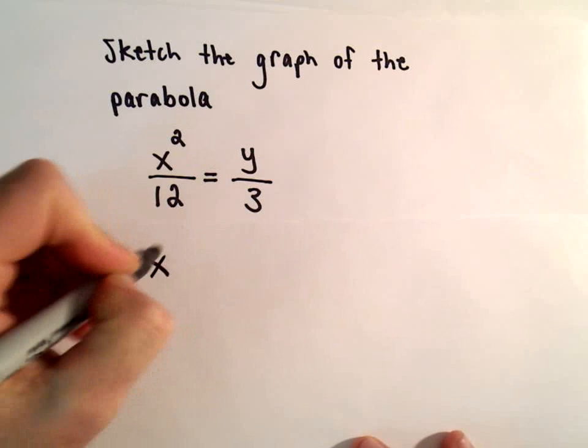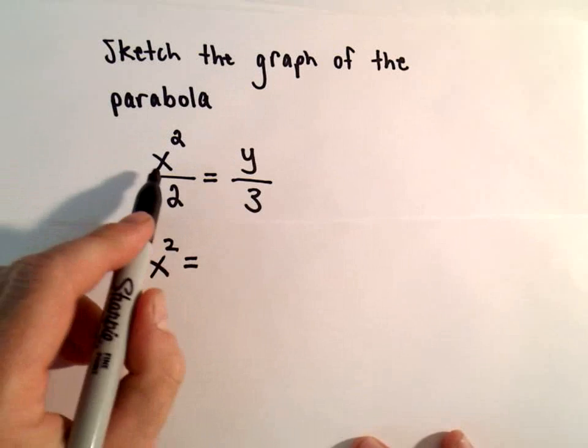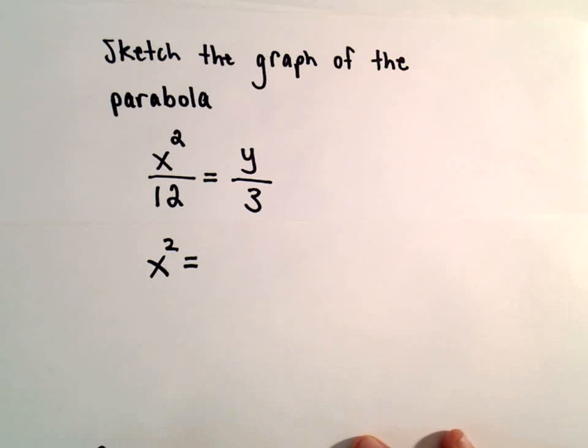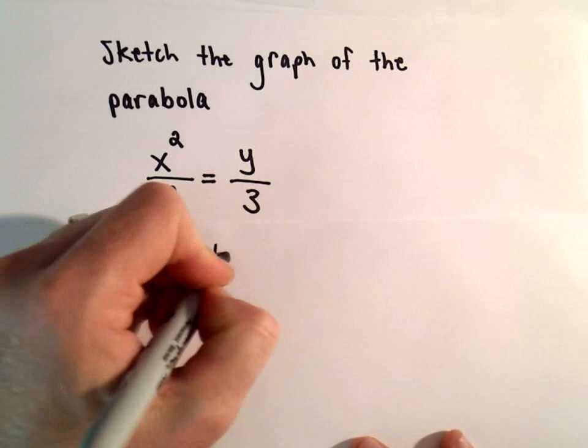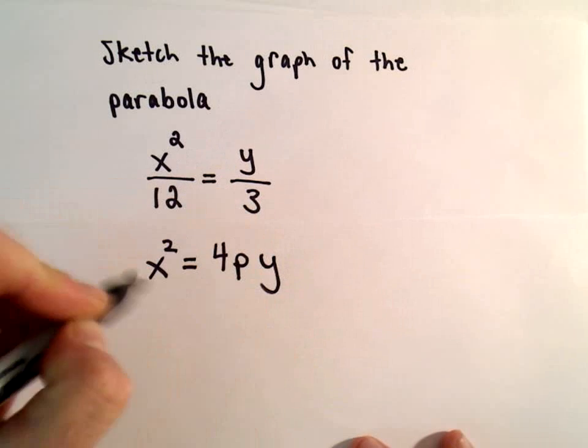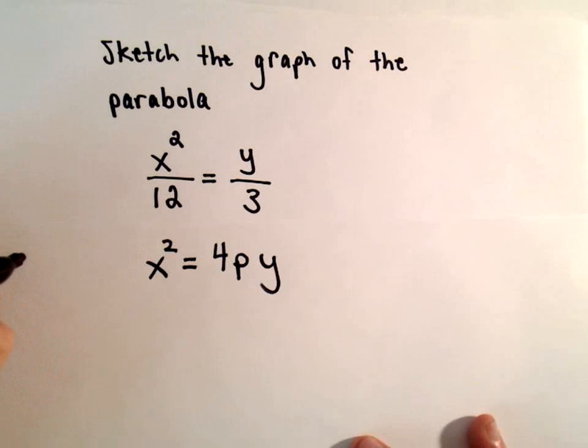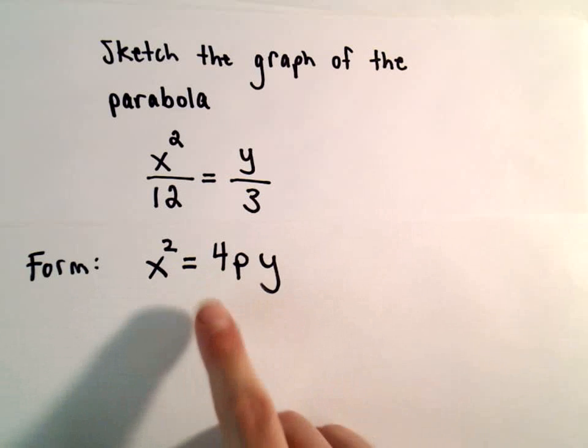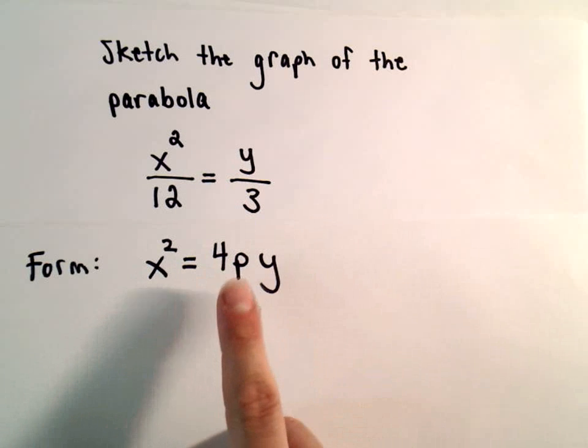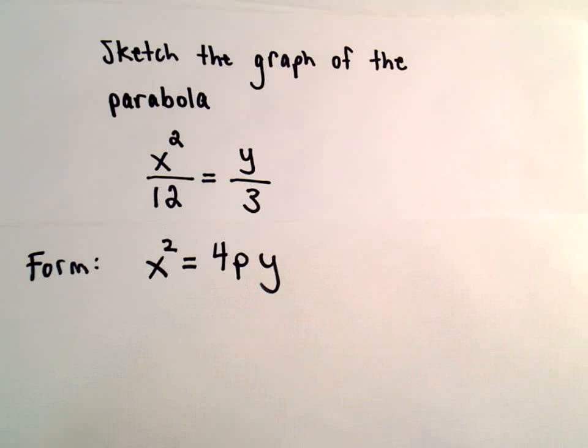So, I see an x squared and a y in my equation here. I'm going to try to put this in the form x squared equals 4p times y. When we do this, we're able to find the directrix and the focus of our parabola immediately.